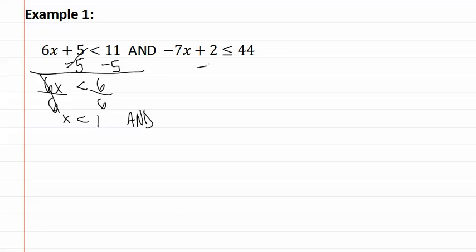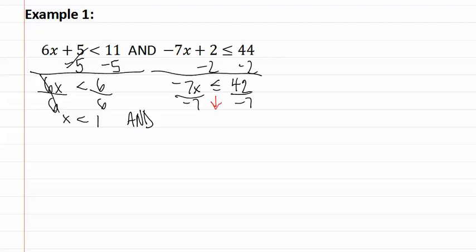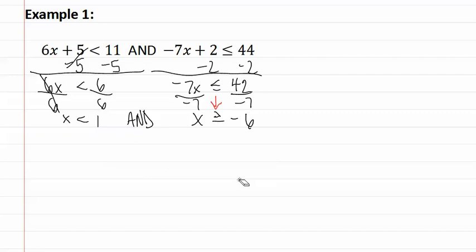Then we solve the second inequality by subtracting two. We have negative 7x is less than or equal to forty-two. We then divide both sides by negative seven, and since we divided by a negative, we must flip the sign to greater than or equal to. So we have x is greater than or equal to negative six.